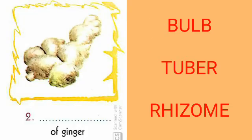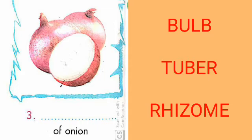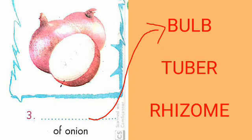This is ginger, and ginger stem is called rhizome of ginger. Now come to the third — this is onion, our well-known vegetable friend also used as a salad. Onion stem is called bulb. It is also called bulb.